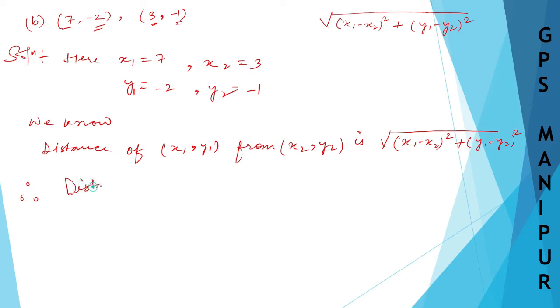distance of (7, -2) from (3, -1) is root over... so here instead of x1, we are going to put 7. So 7 minus x2, that is 3,